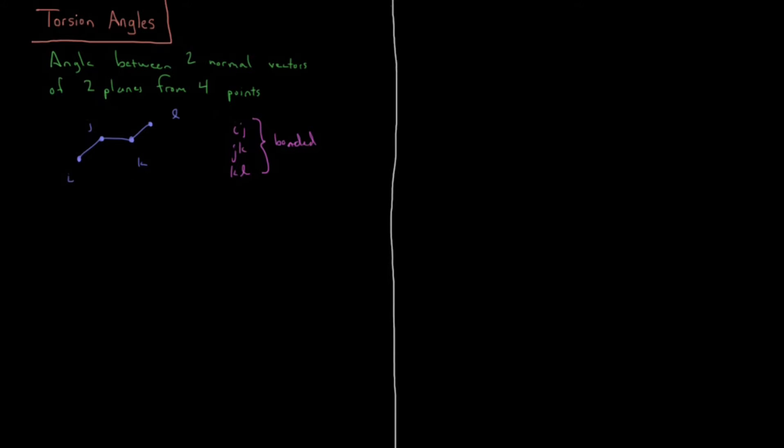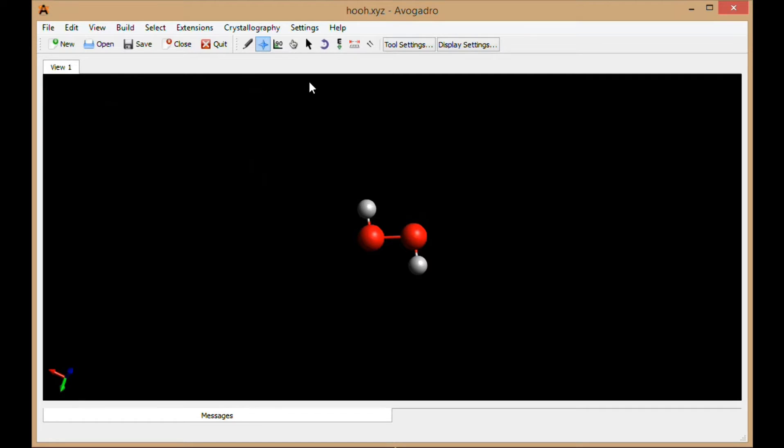The simplest possible molecule that's an example of something with a torsion angle is hydrogen peroxide, HOOH. So I have that here inside of Avogadro. If I turn on my measurement tool, I look at it here. I can see there are three bond lengths, two bond angles, and then what we're going to see is a torsion, which is going to be this angle here.